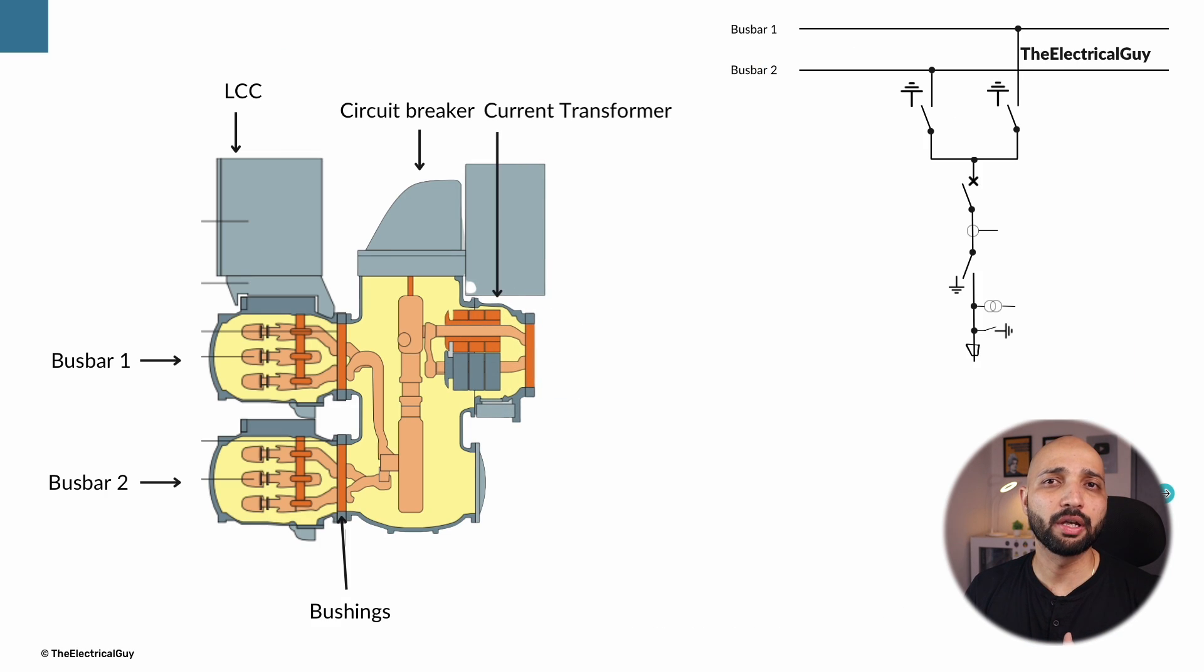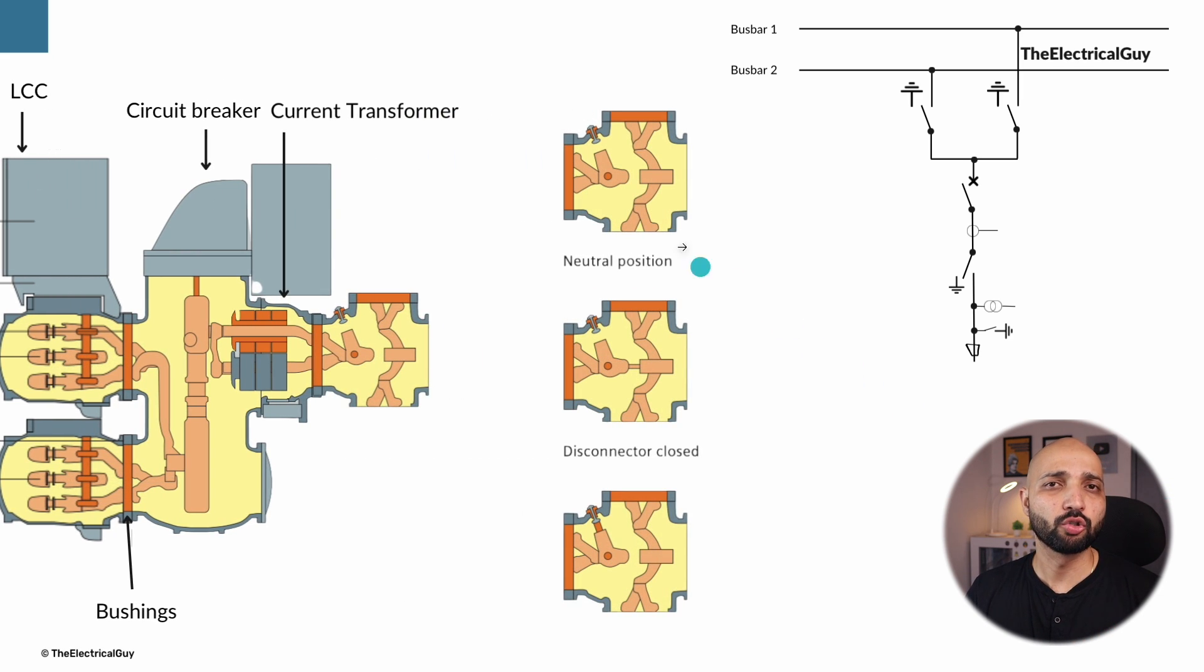After the circuit breaker we saw a current transformer which is used to give inputs to meter and relay and is connected in series in the system. After current transformer we saw there was one more disconnector. This is basically a three position switch. The first one is a neutral position which means the disconnector is open. The second position is disconnector closed, and the third position is earth switch closed. Earth switch is used to ground the trapped charges inside the GIS.